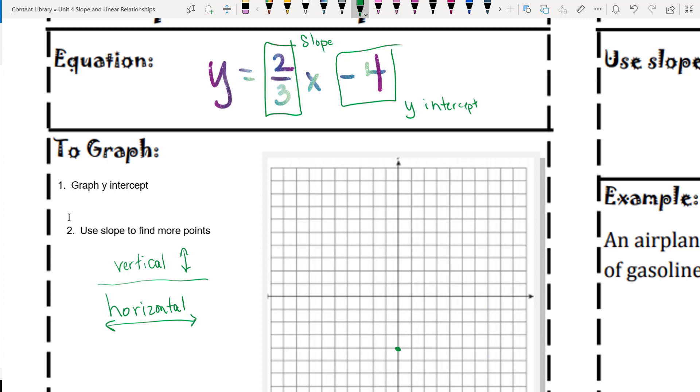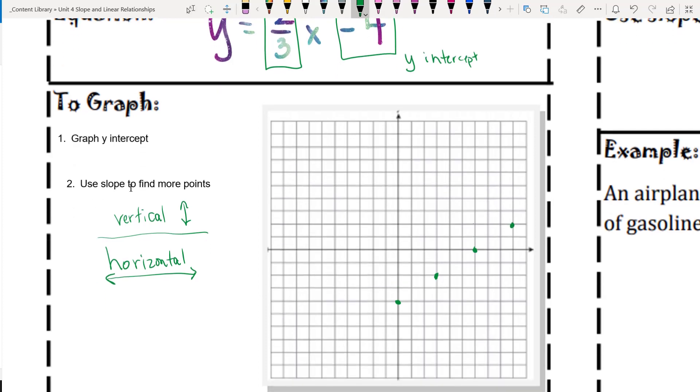Okay, so from there, finding more points. Vertical 2, horizontal 3. Vertical 2, horizontal 3. Then I can also go the other direction. Vertical 2, horizontal 3.